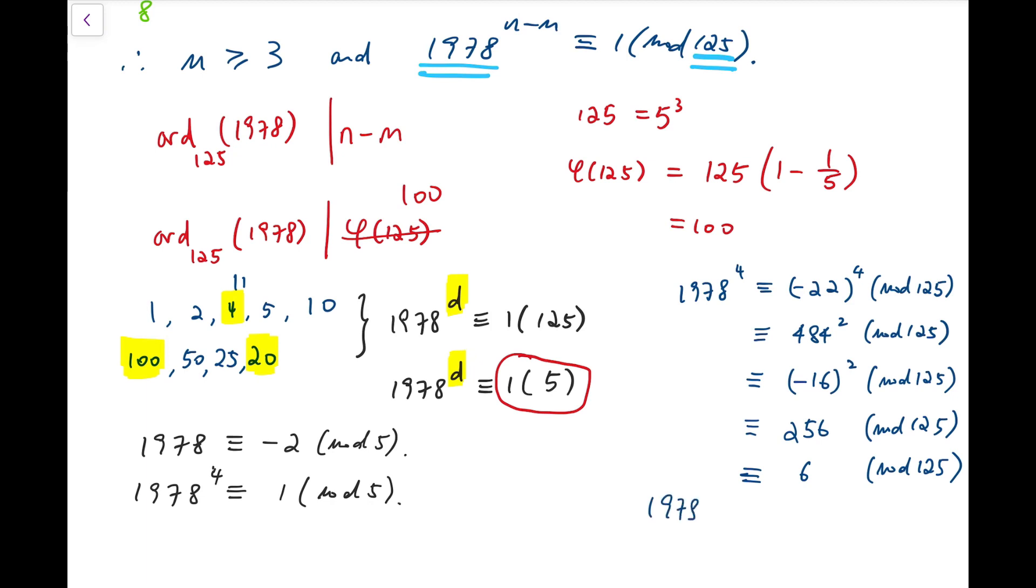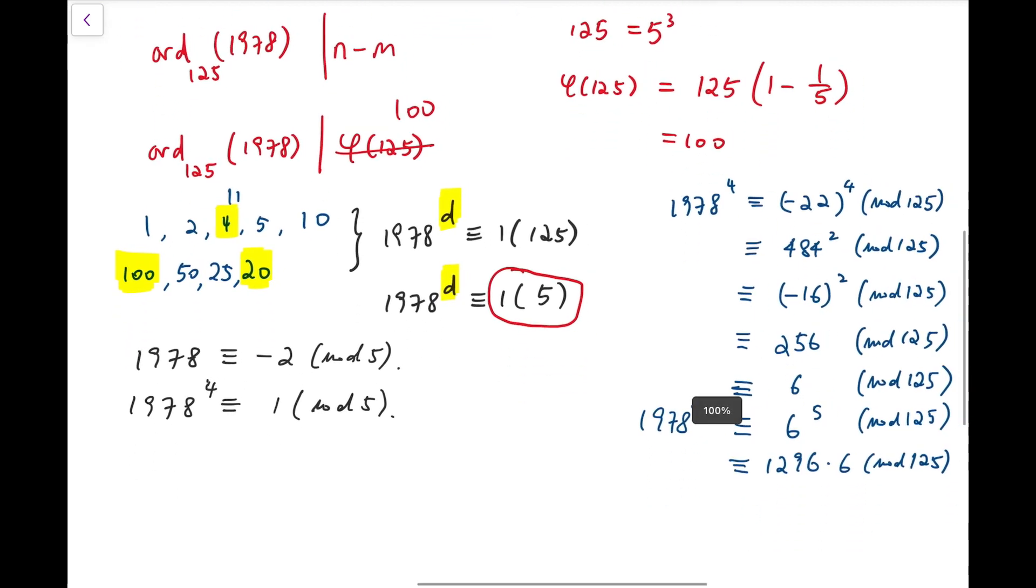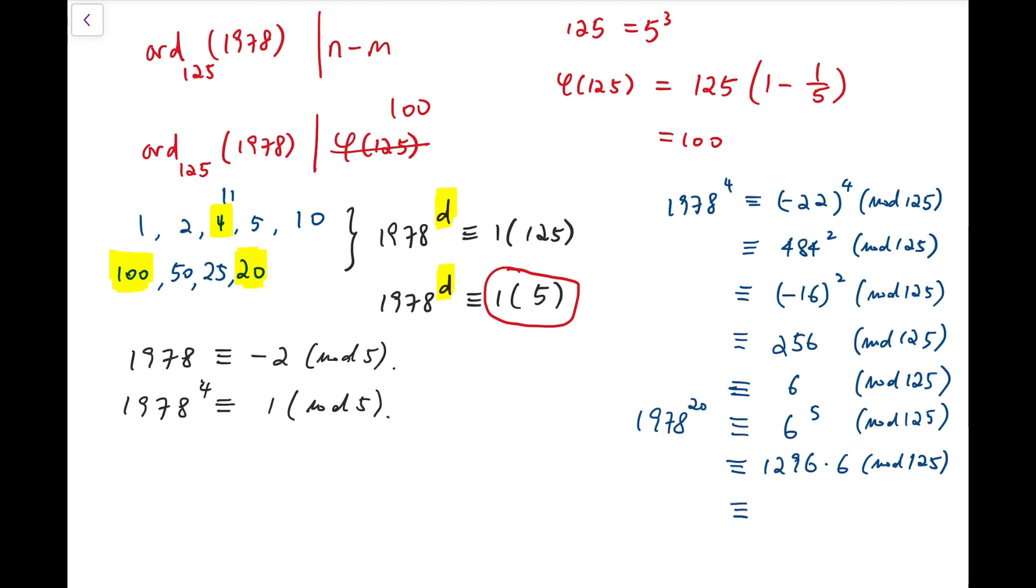As for power of 20, we can use the results above, with the help of the results above, is that it's congruent to 6^(20/4). So, that's 6⁵. And recalling that 6⁴ is actually 1296 multiplied by 6 mod 125. I can further compute, and remainder 46 for the first term. So, the product is 276 divided by 125 with remainder 26. So, again, not 1, and that means our order is actually exactly 100.